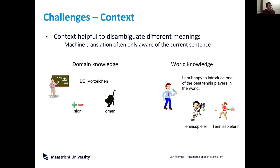In lectures, for example, we saw a translation of 'the omen of a number,' which makes no sense. When you think back to what was originally said in German, people were talking about the 'Vorzeichen' of a number, which means 'sign.' The MT system didn't do the right disambiguation because it lacked domain knowledge — in a math lecture, it is far more probable that 'sign' is meant.